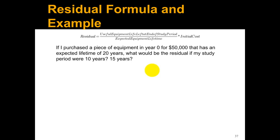Let's look at this formula and example. The residual is the useful equipment life left at the end of the study period divided by the expected equipment lifetime times the initial cost. Let's see how to apply this. If we look at our solar power example where we buy these solar panels in year zero for $50,000 and they are expected to last 20 years, what would be the residual if my study period were 10 years or 15 years?